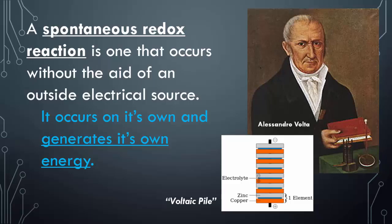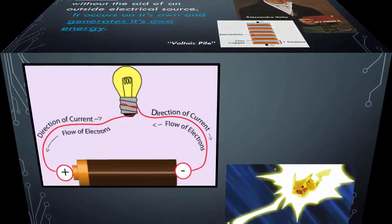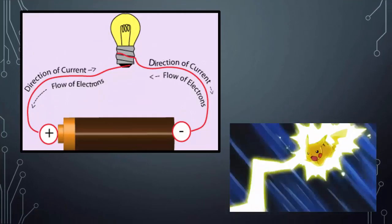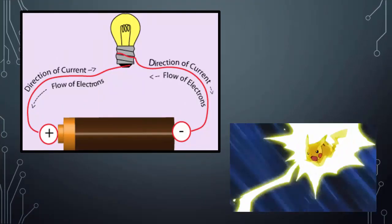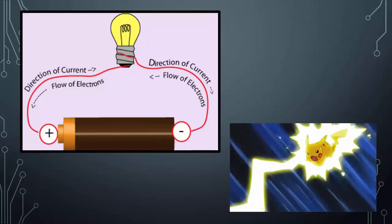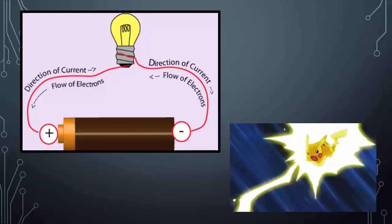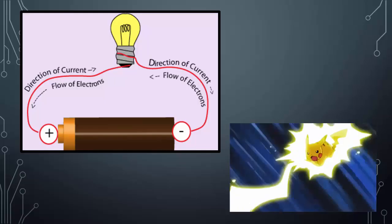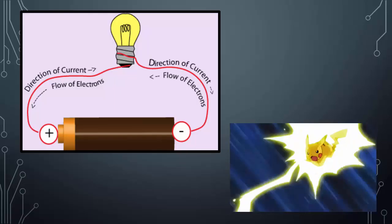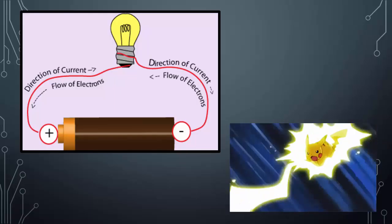If you notice that the little negative charge on top of the voltaic pile goes to the positive charge, that shows the flow of electrons from negative to positive. Here we have a battery, again showing the flow from the negative charge to the positive charge. So if you have a lamp with a light bulb in it and you have to put batteries into it, the wires are going to connect the negative end of the battery to the positive end, but in the middle of all that is going to be our light bulb.